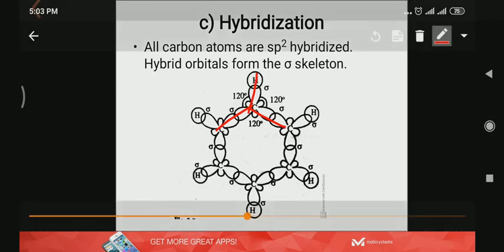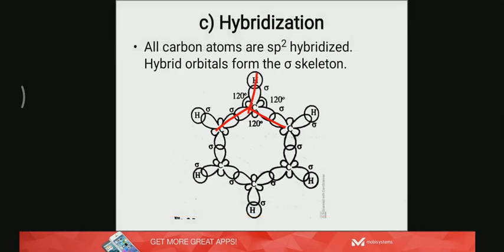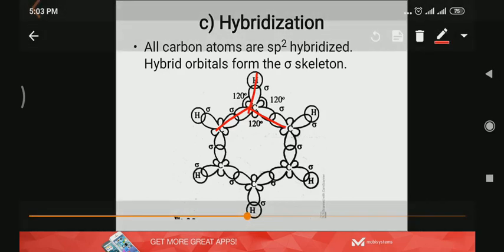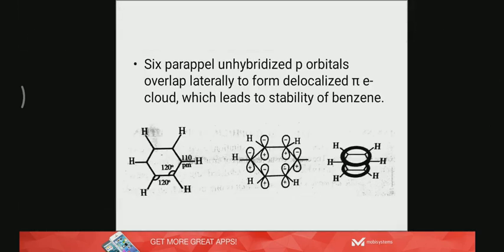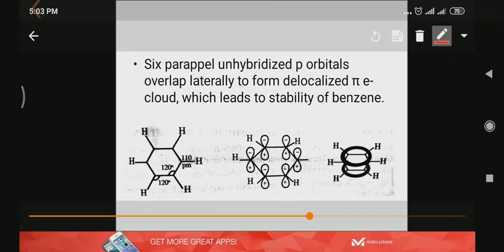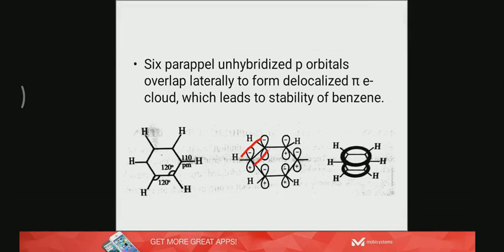The interesting part is the formation of pi bonds. Since it is sp2, there is one p orbital left out, 2pz1 on each carbon, which are parallel to each other. So they will overlap laterally, forming pi bonds.